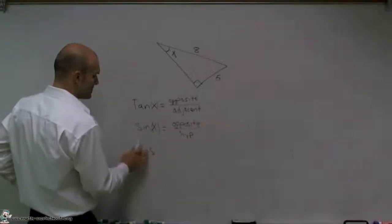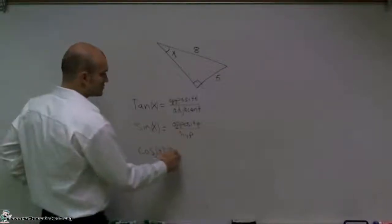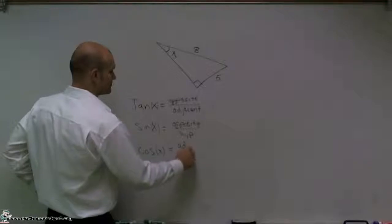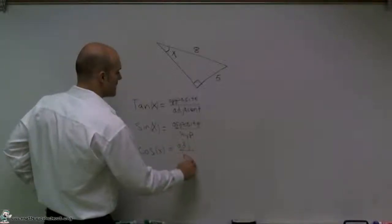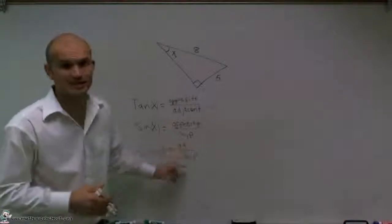And the cosine of x is equal to your adjacent over your hypotenuse. I just started abbreviating these just so you guys get used to this, but it's your adjacent over your hypotenuse.